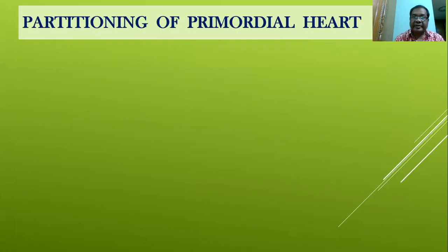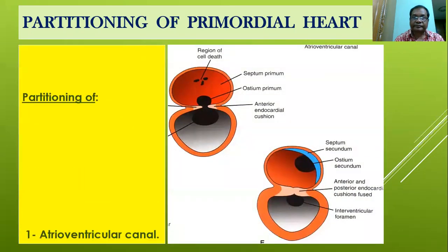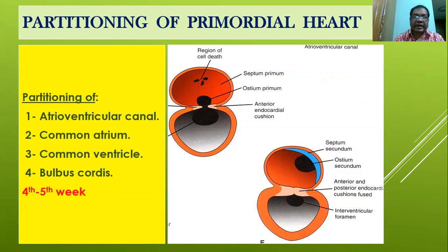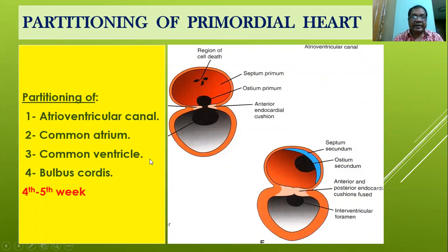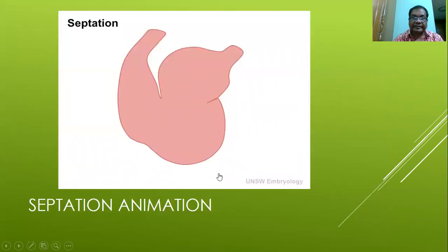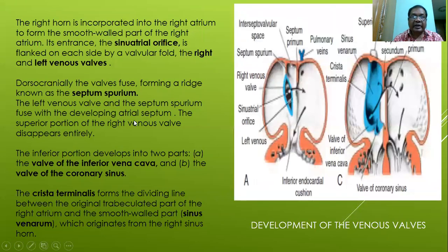Now about the partitioning of the primordial heart. Partitioning takes place at different levels: it involves partitioning of the atrioventricular canal, partitioning of the common atrium, partitioning of the common ventricle, and partitioning of the bulbus cordis. It occurs by development of several septa. The right horn is incorporated into the right atrium to form the smooth wall portion of the right atrium.